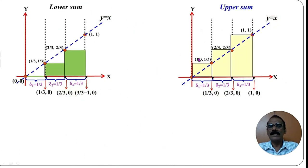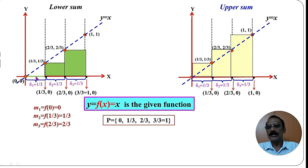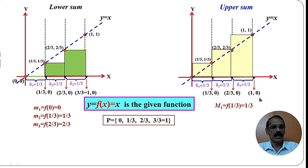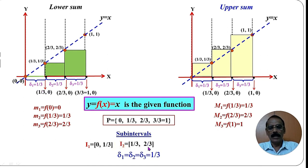These are the graphs representing the lower sum and upper sum. For the function y = x with partition P = {0, 1/3, 2/3, 1}, we have found the infimum values: m1 = 0, m2 = 1/3, m3 = 2/3, and the supremum values: M1 = 1/3, M2 = 2/3, M3 = 1. The length of each subinterval is delta_1 = delta_2 = delta_3 = 1/3.